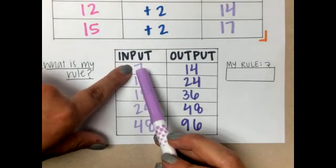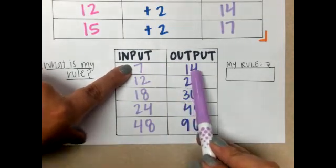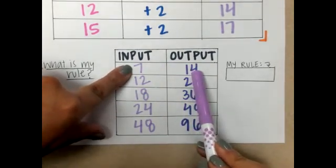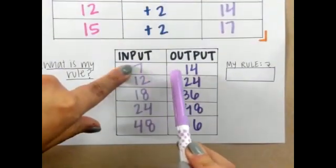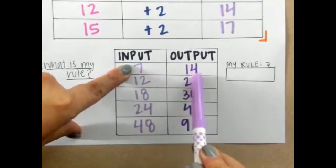I know that 7 times 1 would give me 7, so that can't give me that right answer. What about 7 times 2? 7 times 2, that gives me 14.